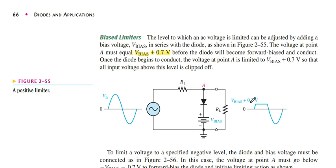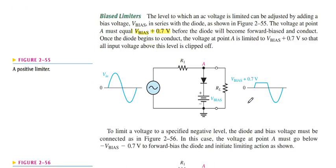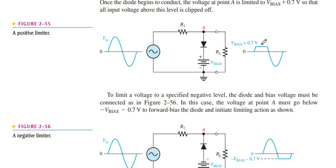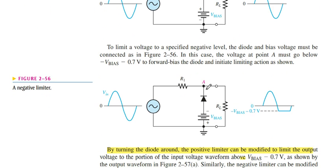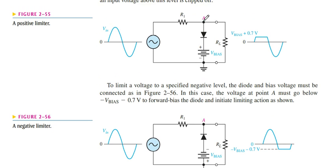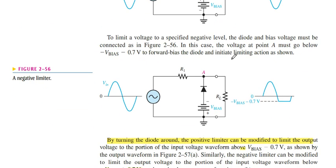First we clip at 0.7 volts. Now we add the battery voltage, so we increase it. The wave shape is the same. The second form is when we reverse the battery — we reverse the battery — so we can get a negative wave form.